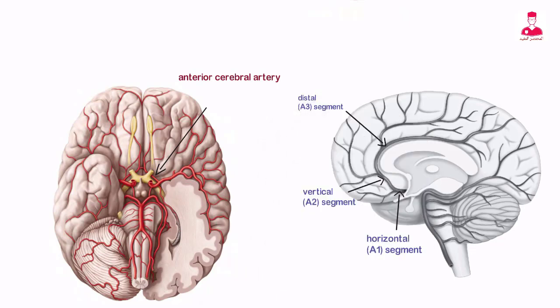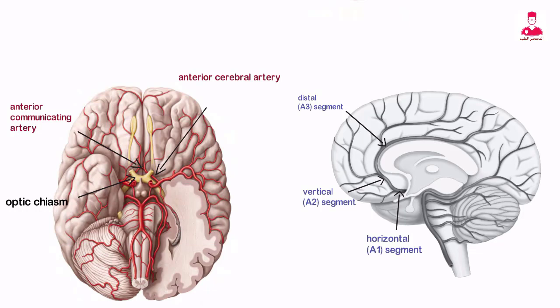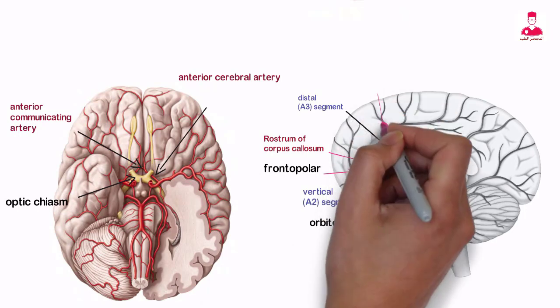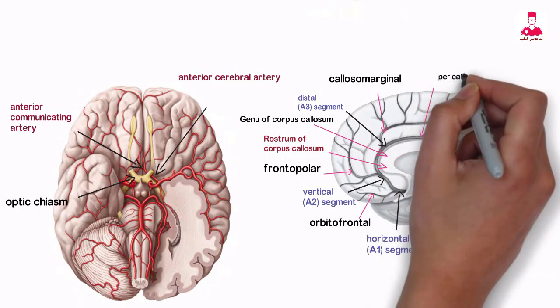The horizontal segment extends from the ICA bifurcation to the anterior communicating artery. The anterior communicating artery joins the two anterior cerebral arteries just anterior to the optic chiasm. The vertical segment, an extension of the horizontal segment, courses superiorly toward the rostrum of the corpus callosum. The major branches of the vertical segment are the orbitofrontal, frontopolar, callosomarginal, and splenial arteries. The distal segment curves around the genu of the corpus callosum and continues as the pericallosal artery.